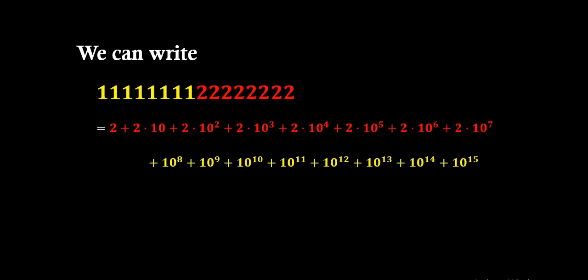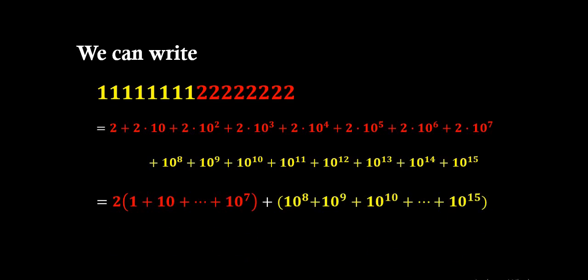Now the key idea is the arrangement we can see in the next line. The terms written in red color can be rewritten as 2 times (1 plus 10 plus 10² up to 10⁷), and the yellow terms are written in condensed form as 10⁸ plus 10⁹ plus ... up to 10¹⁵. Since there are two identical red-colored groups, one will be kept free and the other will be added to the yellow-colored numbers.